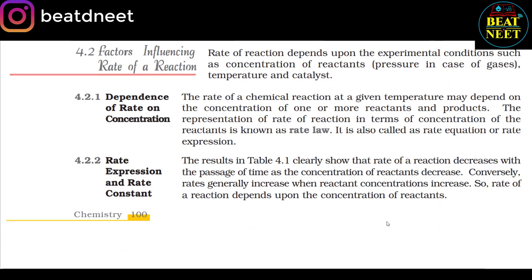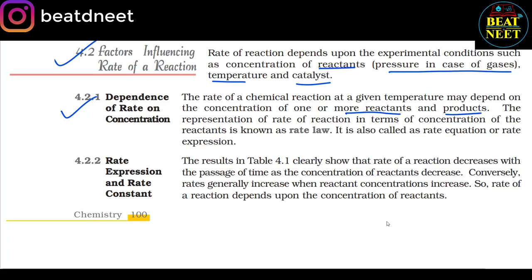4.2 Factors Influencing Rate of Reaction. Rate of reaction depends upon experimental conditions such as concentration of reactants, pressure in case of gases, temperature, and catalyst. 4.2.1 Dependence of rate on reactant concentration. The rate of a chemical reaction at a given temperature may depend on the concentration of one or more reactants and products. The representation of rate of reaction in terms of concentration of reactants is known as rate law, also called rate equation or rate expression. 4.2.2 Rate expression and rate constant. Results in Table 4.1 clearly show that the rate of reaction decreases with passage of time as reactant concentration decreases. Conversely, rates generally increase when reactant concentration increases.